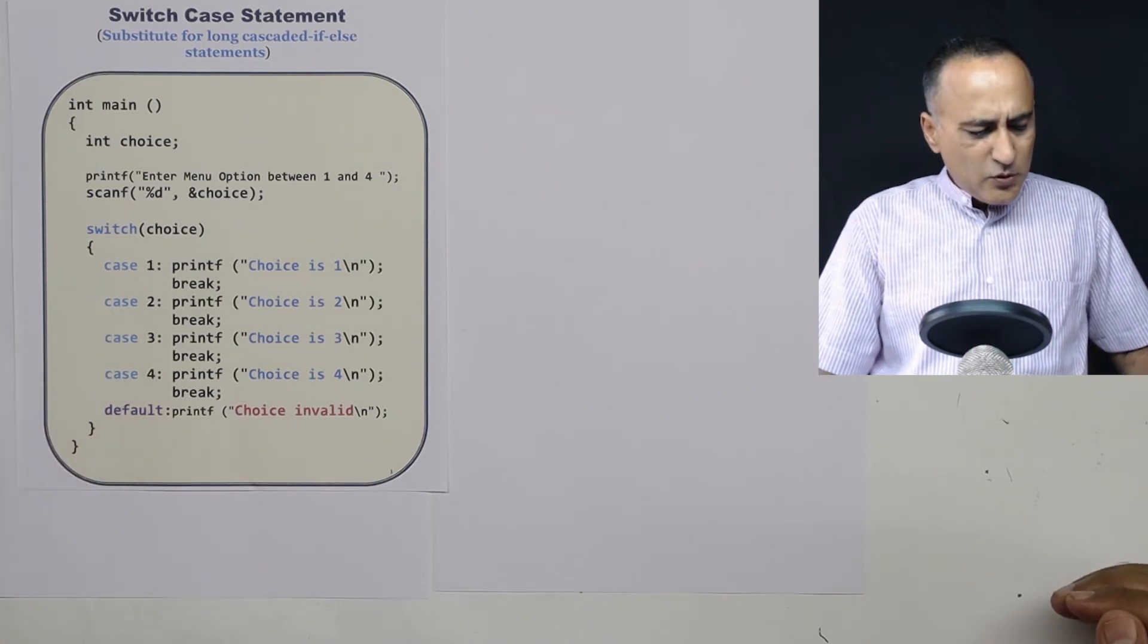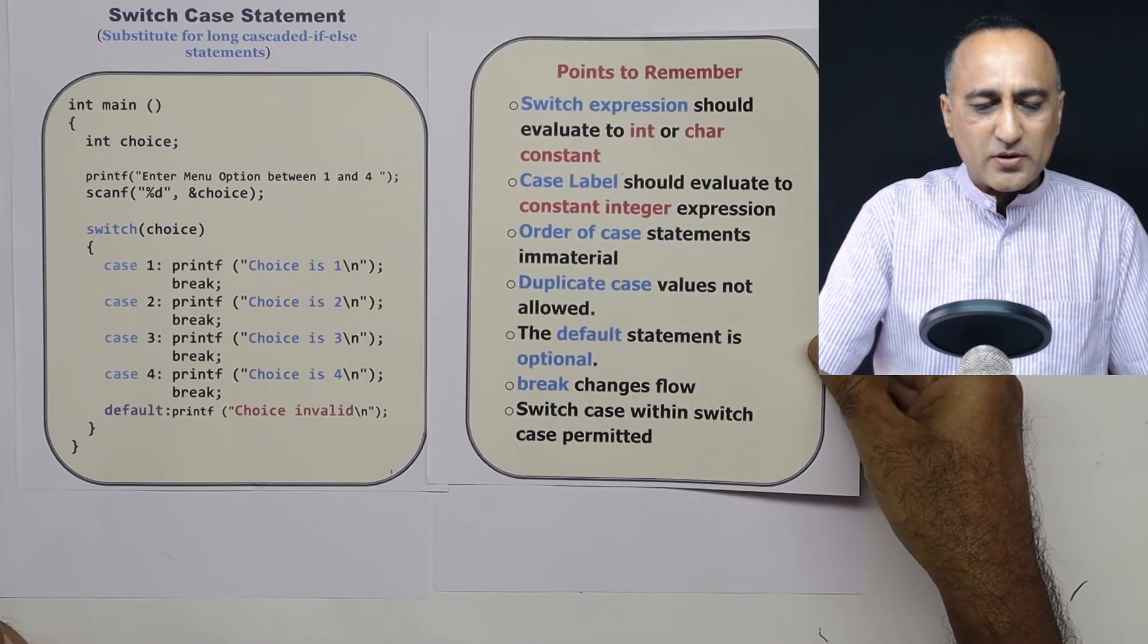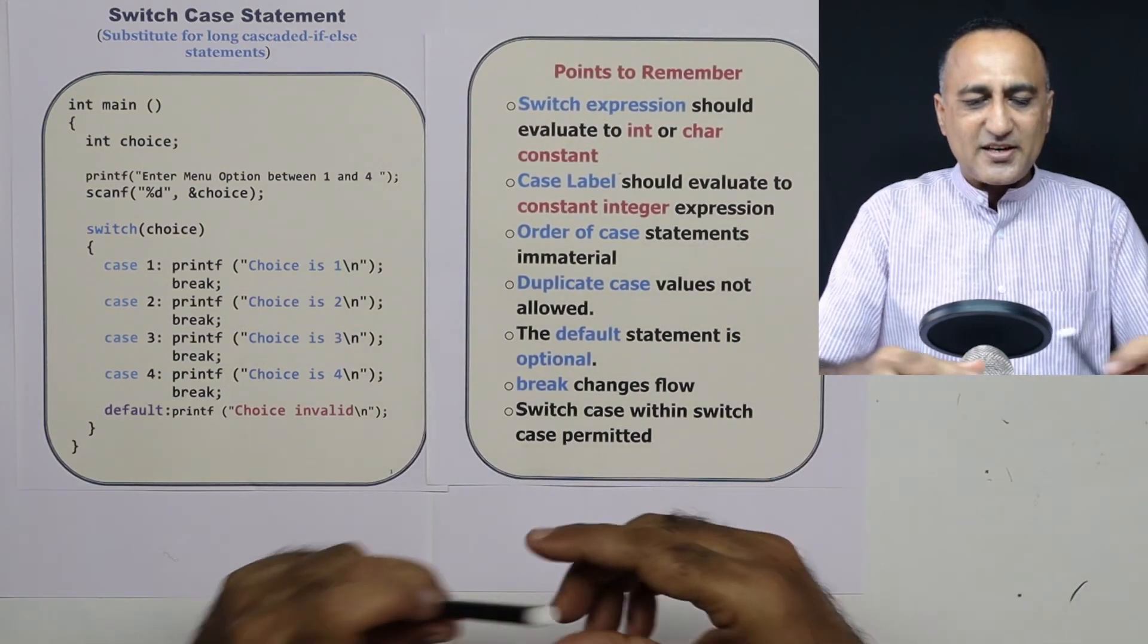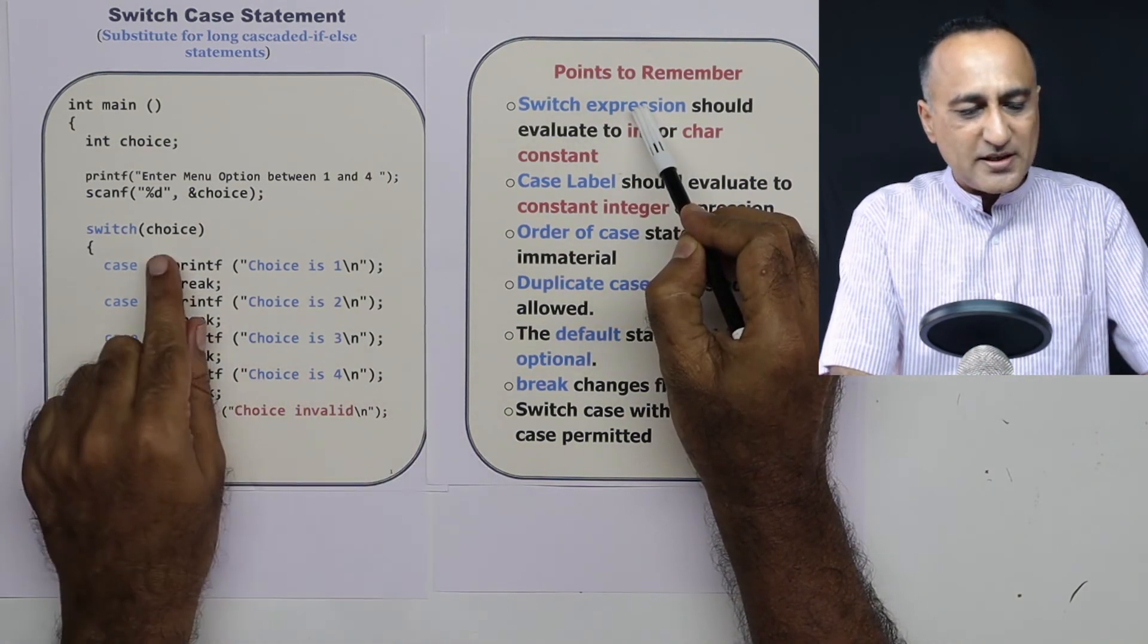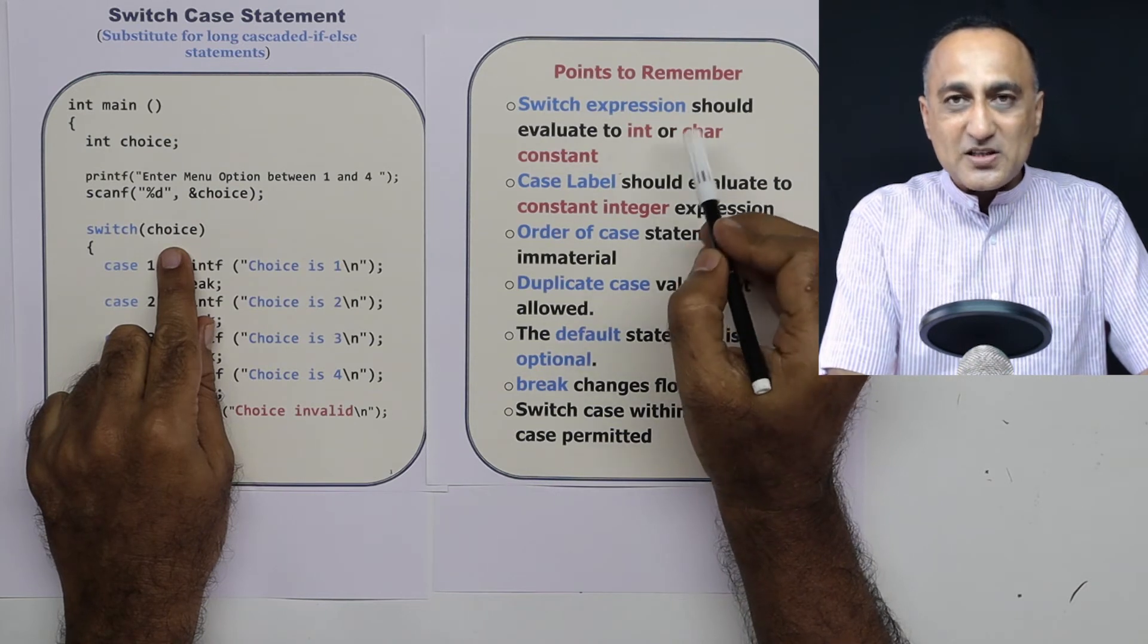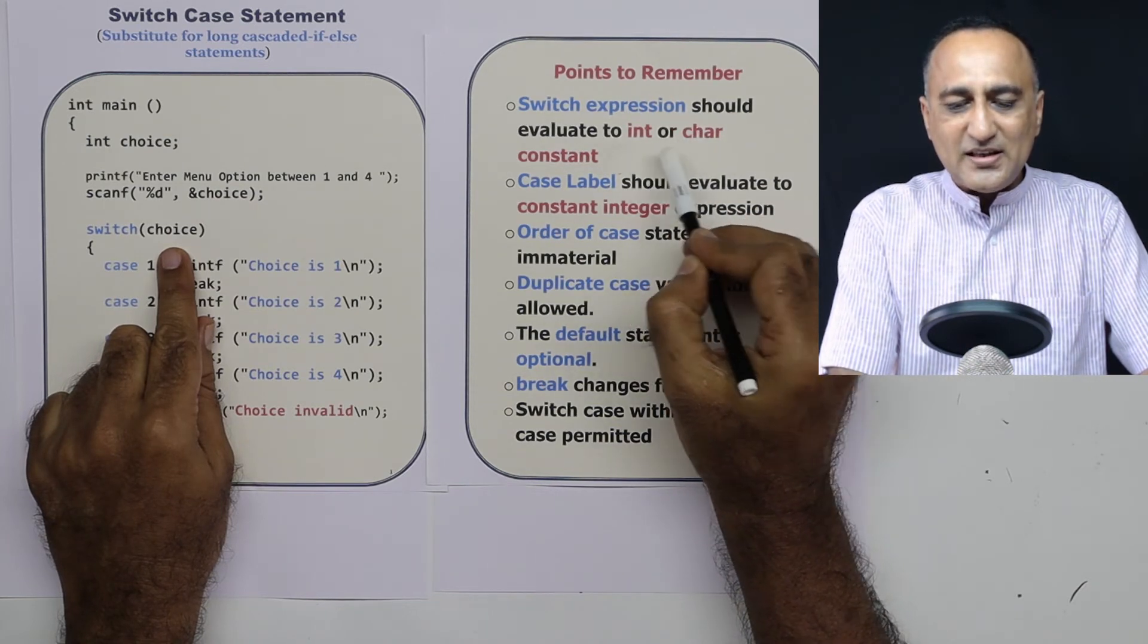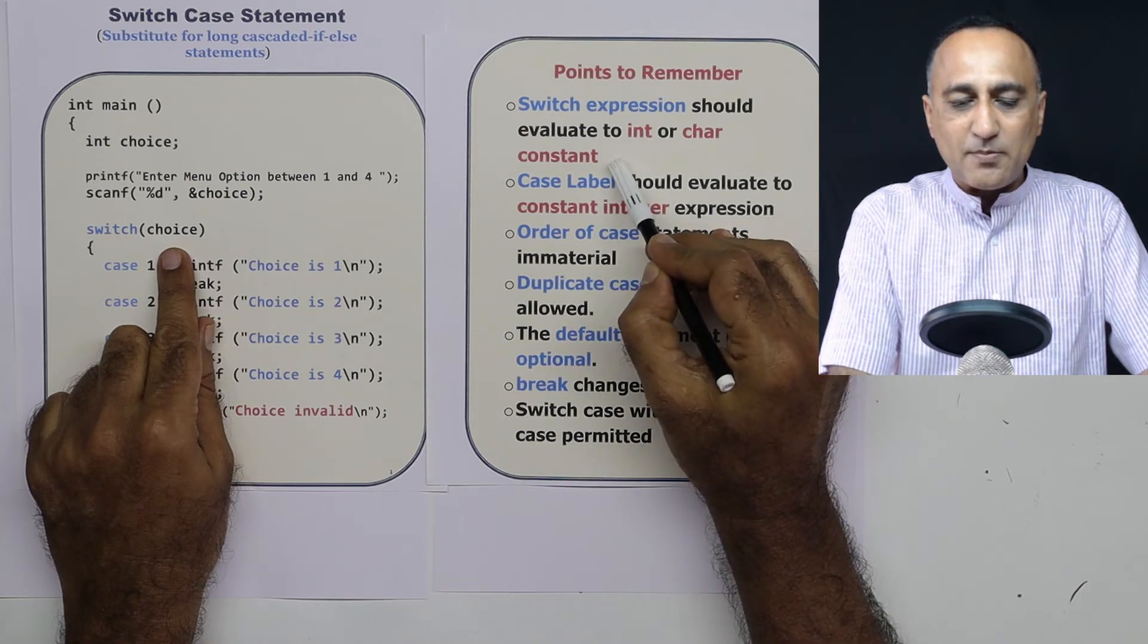Now, you need to understand or remember a few critical points when you're working with the switch case. Let's try to take what are these critical points. The switch expression, that means in place of choice, you can have an expression. But when it is evaluated, it should result in an integer or a character type of a constant.